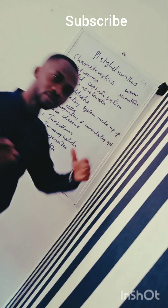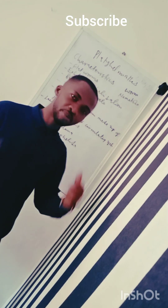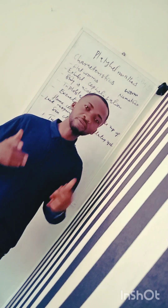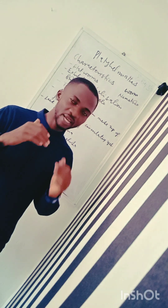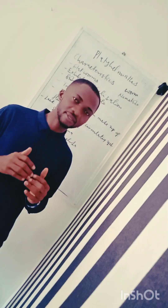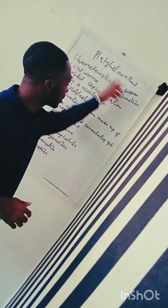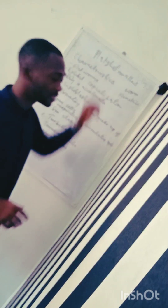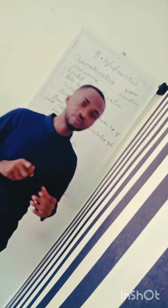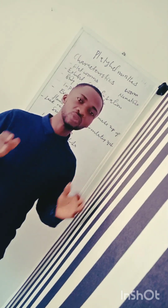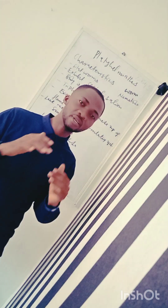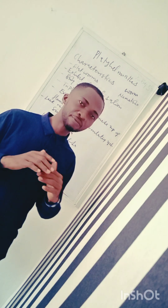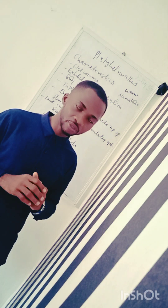What are Platyhelminthes? These are a group of worms that are flat. The word 'helminth' means worm, and 'platy' was coined from the word 'plate.' We know that plates are usually flat, so Platyhelminthes are flat worms. That is their common name.